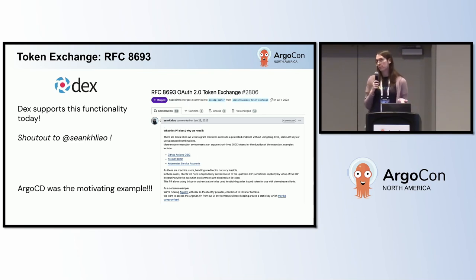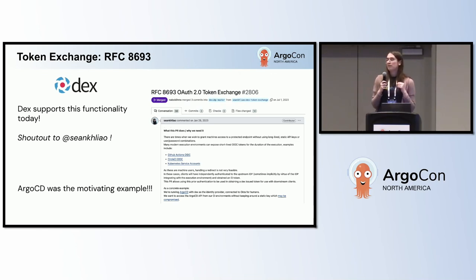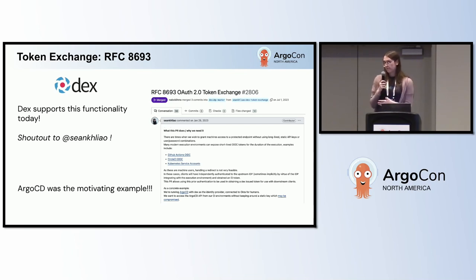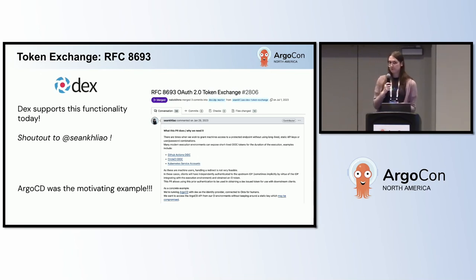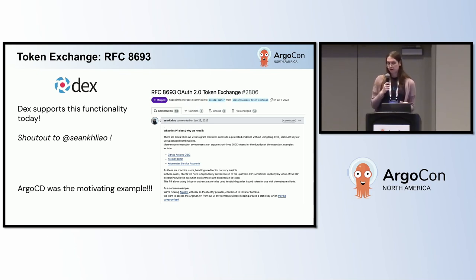You can basically exchange a GitHub Actions token, which isn't trusted by Argo CD, for a DEX token, which is trusted. This lets you access the Argo CD API in a fully automated way in a CI workflow and actually use that functionality for things you might want to do in CI.